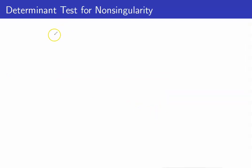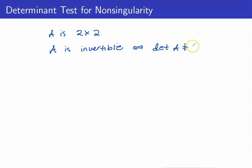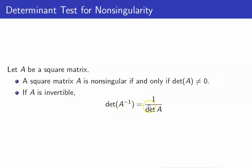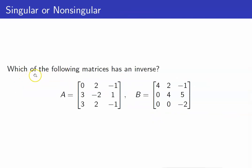Let us recall that when we studied 2 by 2 matrices, we learned that A is invertible if and only if the determinant of A is not equal to 0. It turns out this result is true for any n by n matrix. We have this theorem: if A is any square matrix, A is non-singular or invertible if and only if the determinant of A is not equal to 0. Moreover, if A is invertible, the determinant of its inverse is simply equal to the reciprocal of the determinant of the original matrix. For example, which of the following matrices has an inverse? Let us observe that B is an upper triangular matrix, so its determinant is simply the product of its main diagonal entries.